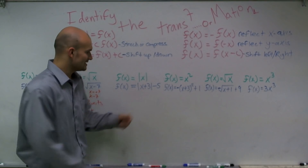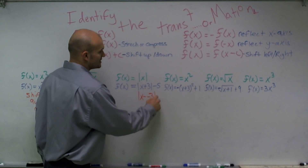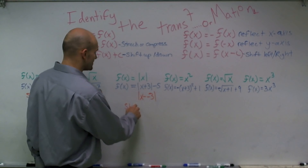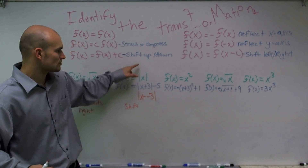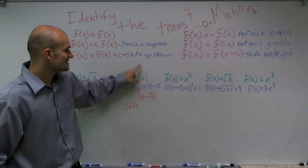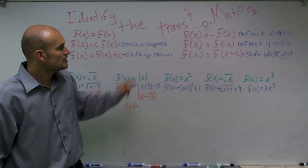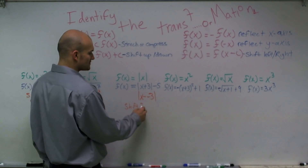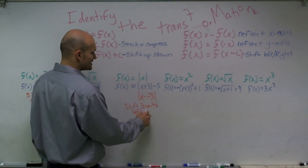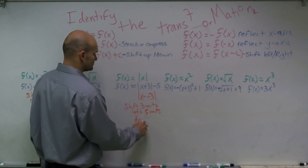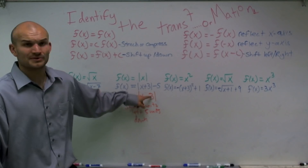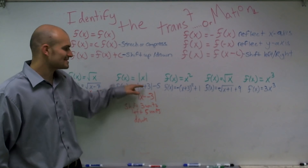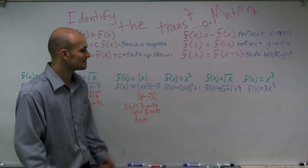For the next problem, I see x plus 3 inside the function and minus 5 outside. My function is f of x equals the absolute value of x. The x plus 3 inside — which is x minus a negative 3 — tells me to shift three units left, since it's positive inside. The minus 5 outside tells me to shift five units down. So the transformation is: shift three units left and five units down.